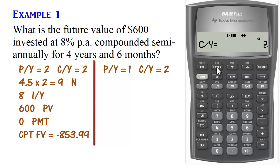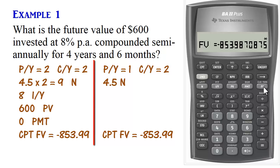Scroll down. Make sure you set C/Y back to 2. Enter. Second Quit. And then you can set N to 4.5 years. 4.5, N. And if you compute future value, you'll get the exact same result as before.